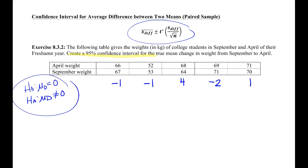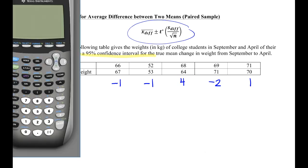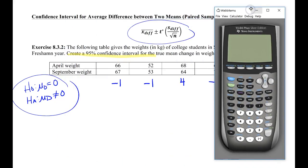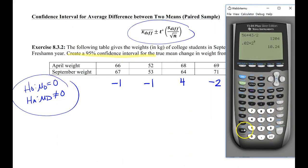So we do need an X bar, a T star, an S, all that stuff. So I'll go ahead and just do this one by hand instead of using StatCrunch just because I have to go find all the information. So we need all of our data for how much people actually gained or lost between September and April.